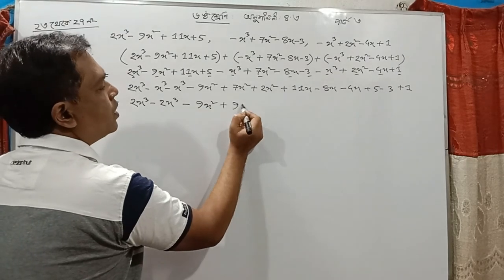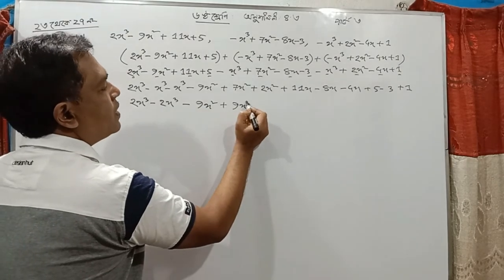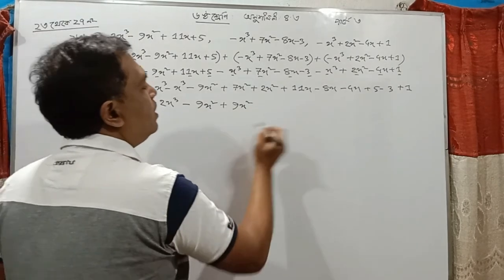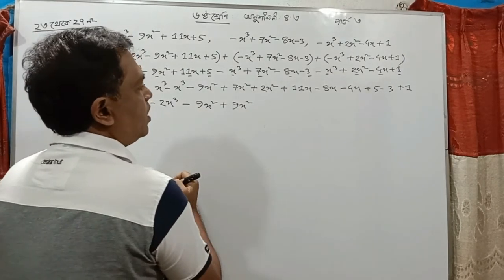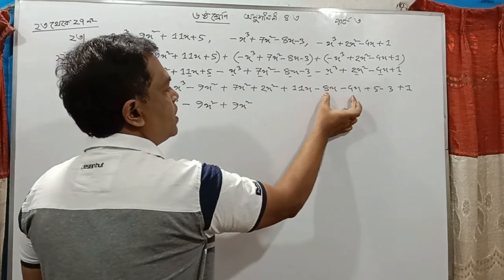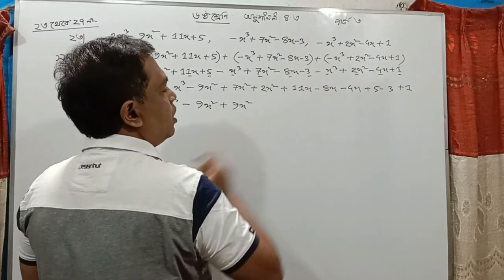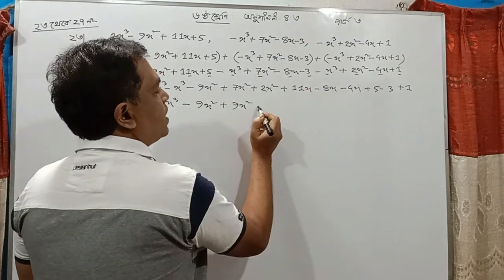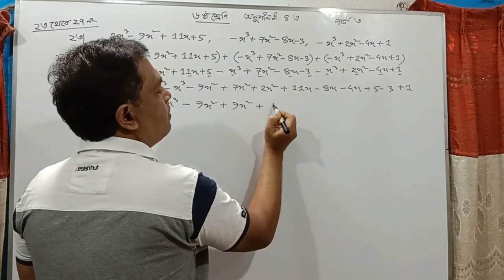You need to convert all the method in x3: x9 or plus 9x square, and you will need two minus x zero plus 11x.